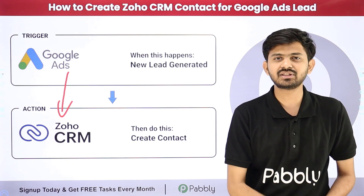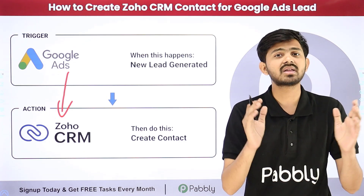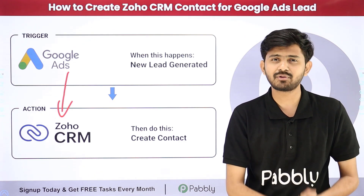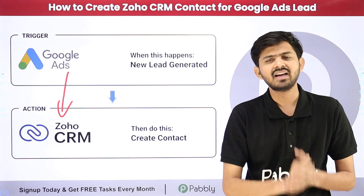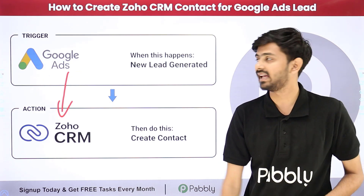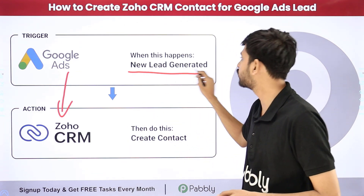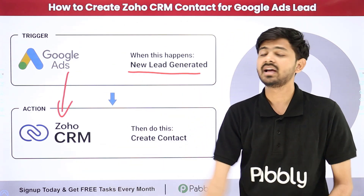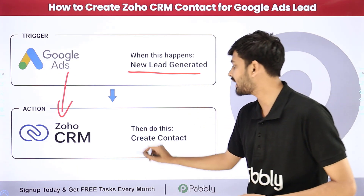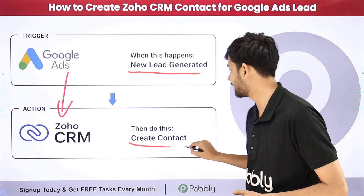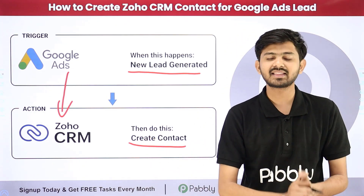To do this automatically, I need to build a connection between Google Ads and Zoho CRM. I'm going to use Pabbly Connect, which is an amazing software for automation and integration. With Pabbly Connect, whenever I receive a new lead through Google Ads, it will automatically create a new contact in Zoho CRM.